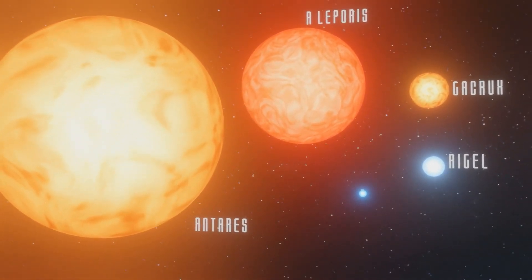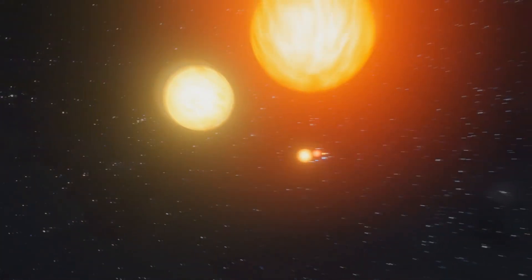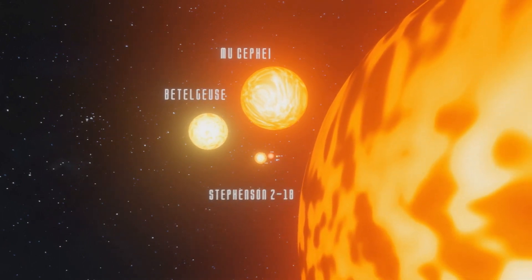Stars have been discovered that are larger still than Antares, such as Betelgeuse, Mu Cephei, and Stevenson 2-18, which is a gargantuan star that has been given a rather boring name.